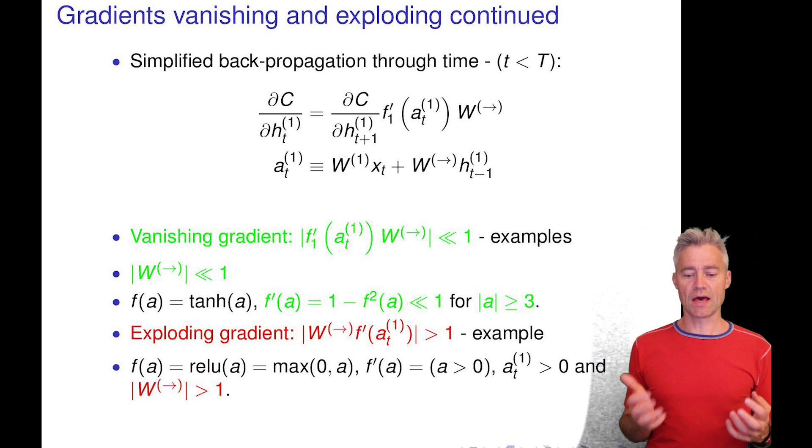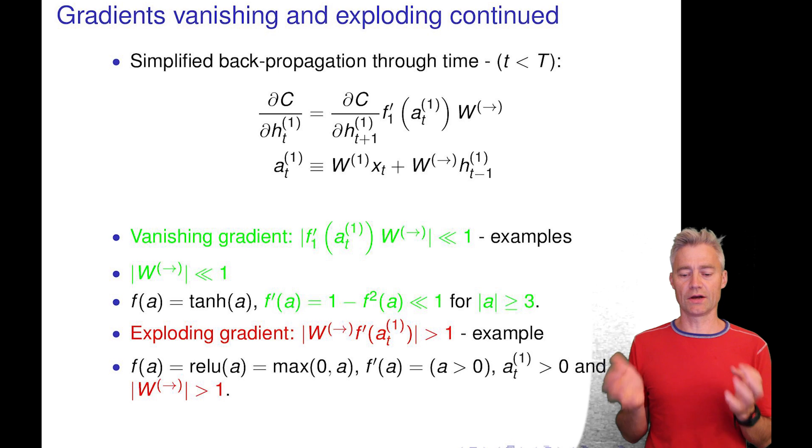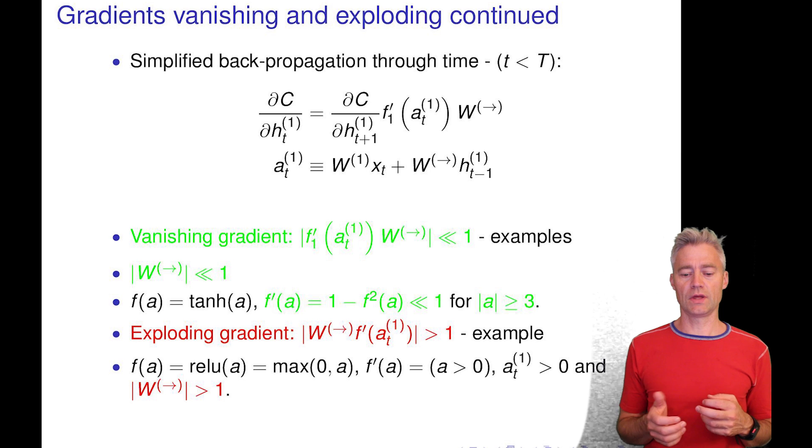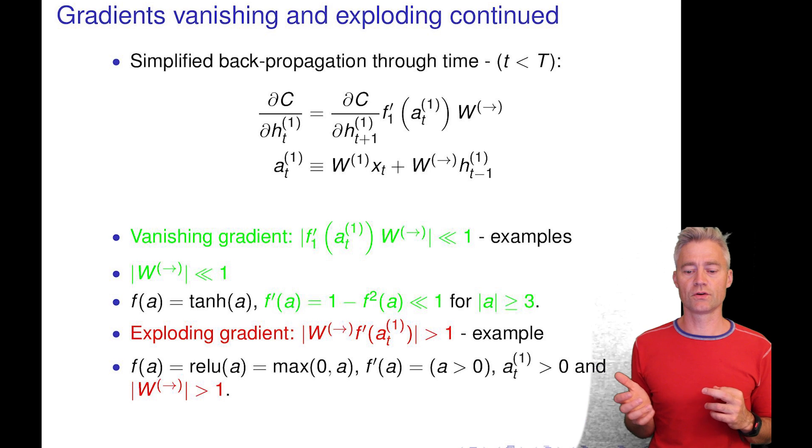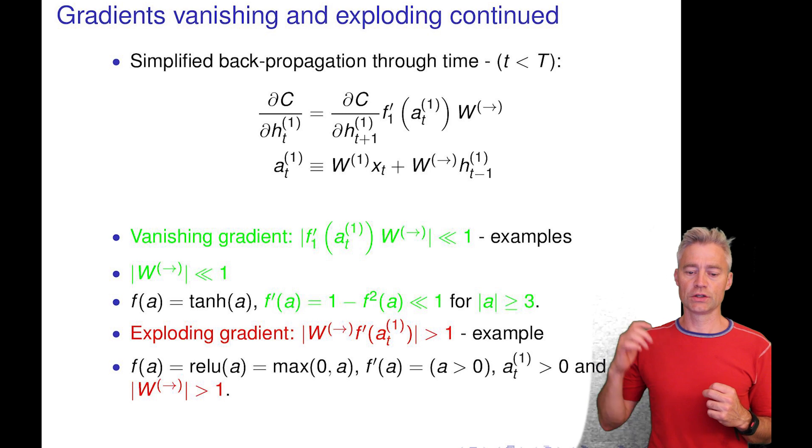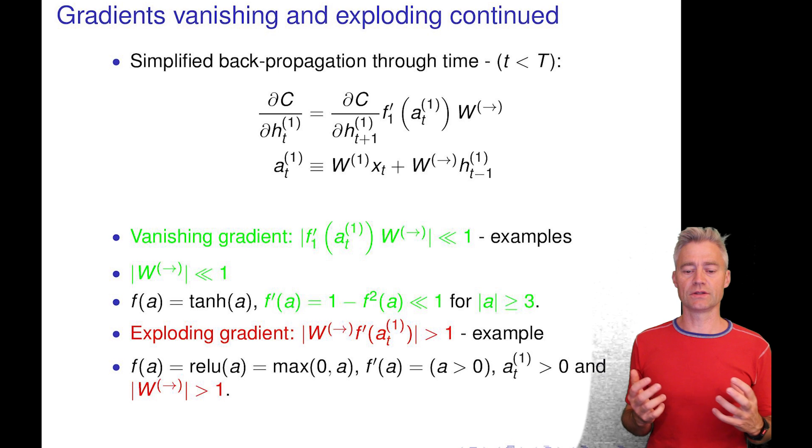Exploding gradients can happen in the opposite situation that this factor we multiply with in the recursion becomes numerically larger than one. And if we take the rectified linear units, then we can see that the derivative is just one if the argument is larger than zero. So this means that if we have a positive argument to the activation function and our weights forward in time is numerically larger than one, then we have a gradient that becomes larger and larger.